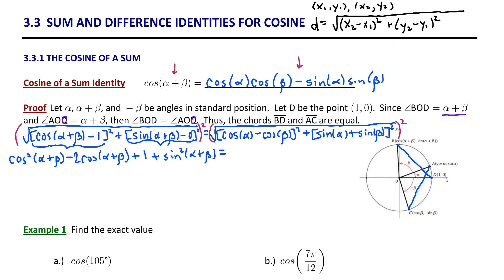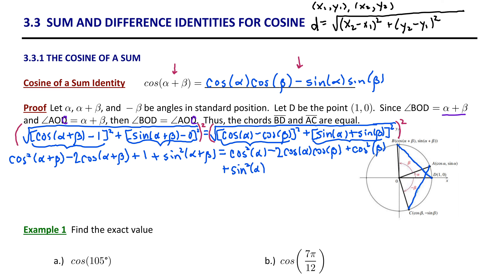On the right side, we carry out FOIL as well. The product of the first two terms gives cosine²α. The outside and inside terms combine to give minus 2·cosine α·cosine β. The last terms give plus cosine²β. Then foiling the second component gives sine²α, plus 2·sine α·sine β, and plus sine²β.